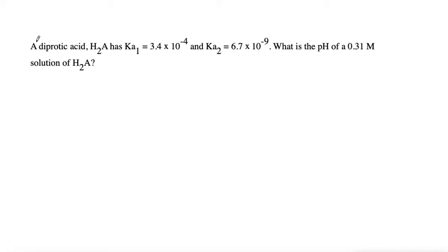Here we have a problem that says a diprotic acid, H2A, has Ka1 of 3.4 times 10^-4 and Ka2 of 6.7 times 10^-9. The question is asking, what is the pH of a 0.31 molar solution of H2A?